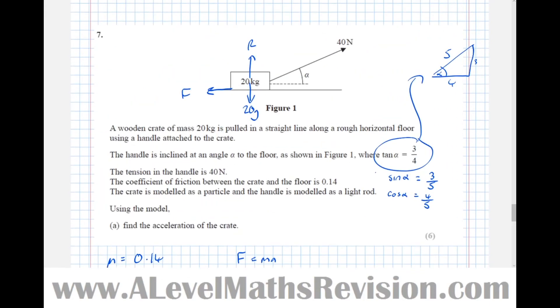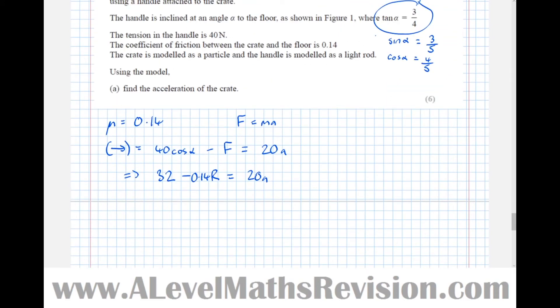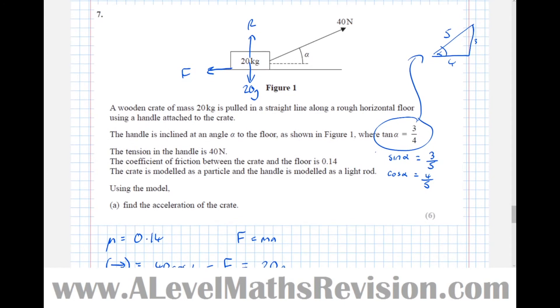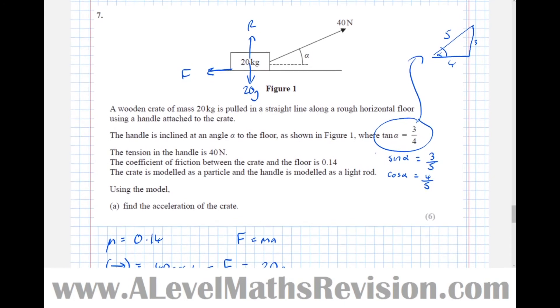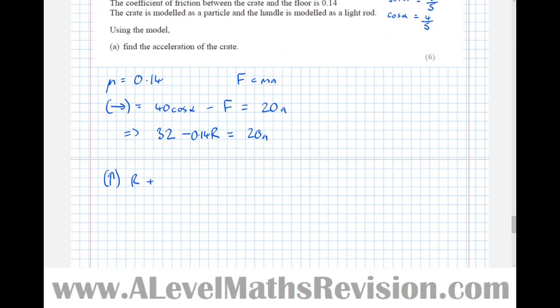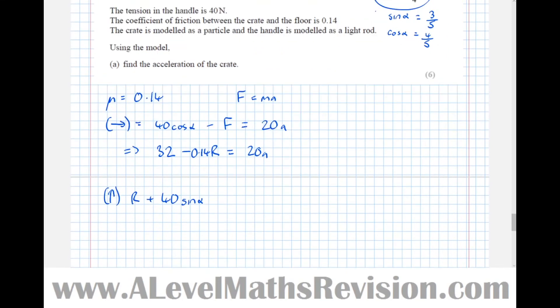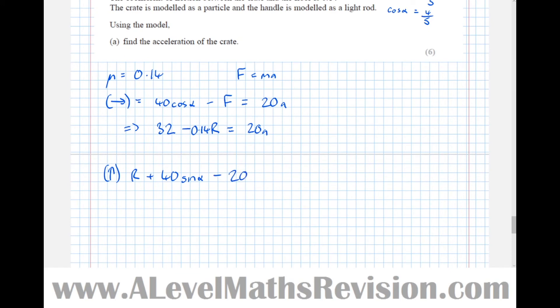So let's now do a bit of resolving upwards. So upwards. So in the positive direction i.e. upwards is R plus 40 sin alpha. R plus 40 sin alpha. Take everything going downwards which is 20 G equals mass times acceleration. However in the up direction or the vertical the acceleration is 0. It's not moving up nor down. It's only moving left or right.